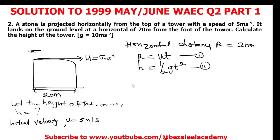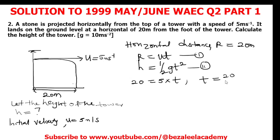Using equation 1: R = ut, we have 20 = 5 × t. We are trying to calculate t from equation 1 so we can substitute it into equation 2 to find the height h. So t = 20 divided by 5, which gives t = 4 seconds.